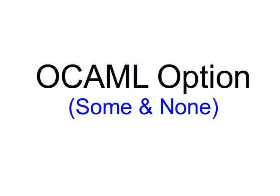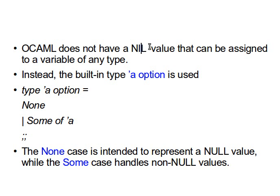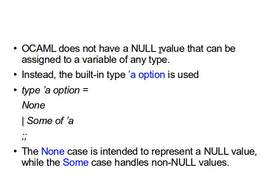OCaml Option is a way of representing, or a way around having, the null value. By default, OCaml doesn't have a null value — the one we are used to in Java, C, or PHP. Some other languages use nil rather than null. Basically, OCaml doesn't have a null value that can be assigned to a variable for any type.